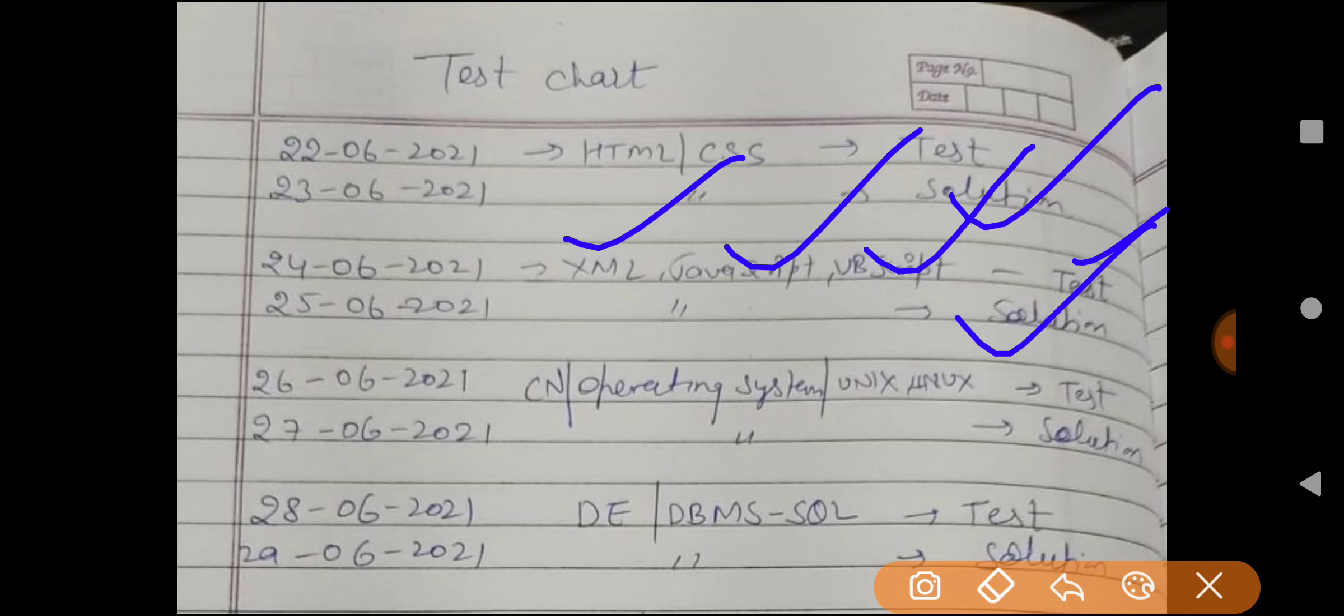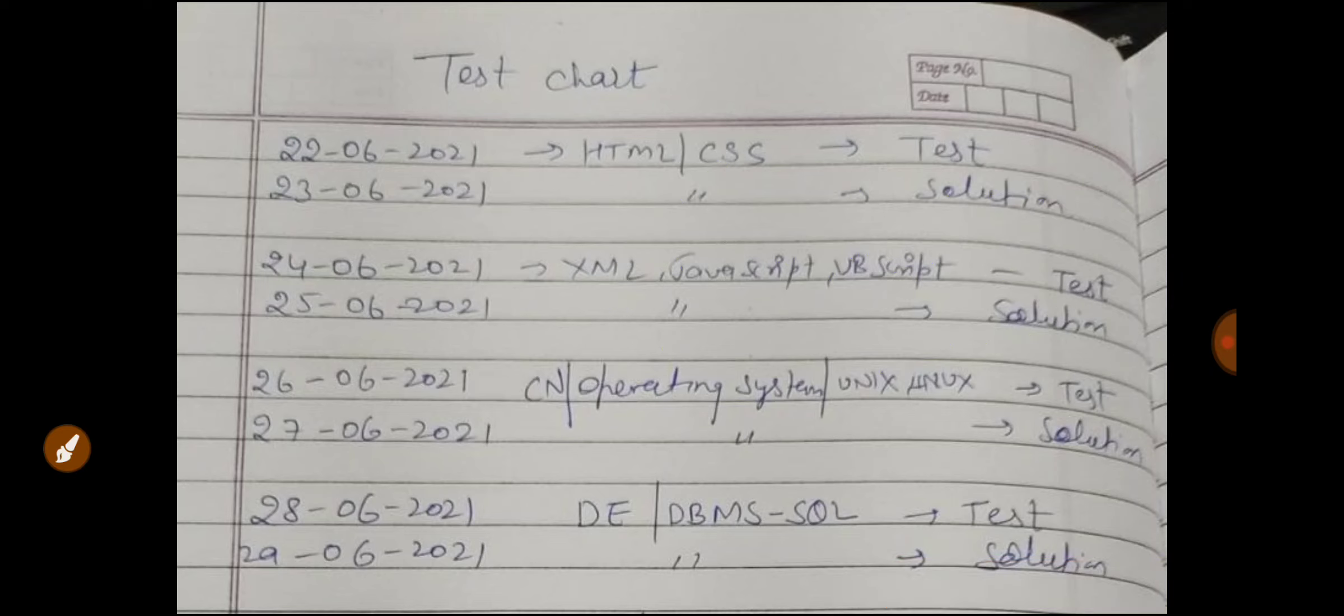26 June 2021, computer network, operating system, Unix and Linux, and 27 June we will discuss the solution. All questions will be 50 to 100, 150 to 200. There will not be more than that.